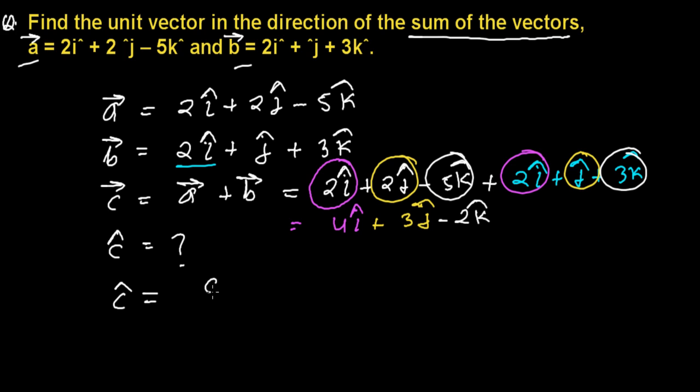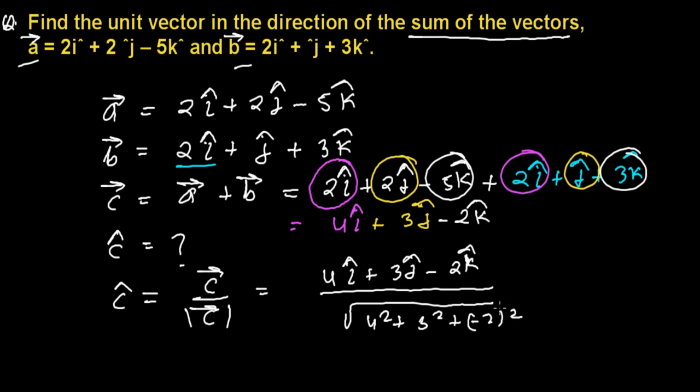Since we have the new vector c, we know very well how to find out the unit vector of c. That is the vector divided by the magnitude of that vector, and our vector is 4i plus 3j minus 2k. Let's find out the magnitude of this, and the magnitude is the square root of the sum of the squares of the coordinates. So the coordinate is here 4, so 4 squared, 3 squared, and here plus minus 2 squared.